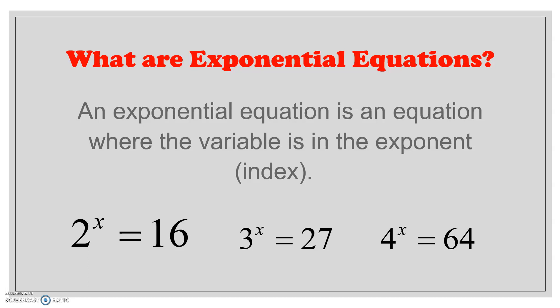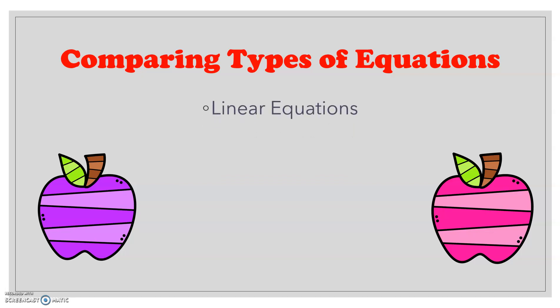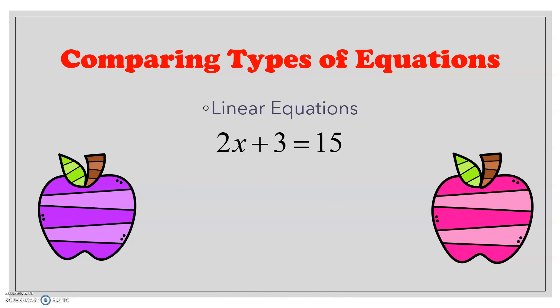Before we do that, let's compare different types of equations. The first one you should be very familiar with is linear equations. They look similar to this: 2x plus 3 is equal to 15. Notice that there are no powers, no squares, no cubes, nothing to the power of x. When I graph it, it's going to give me a simple straight line.